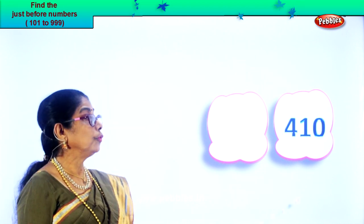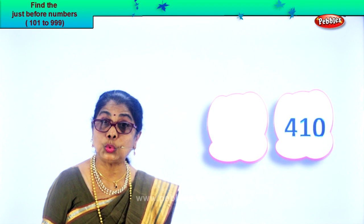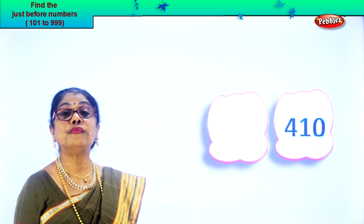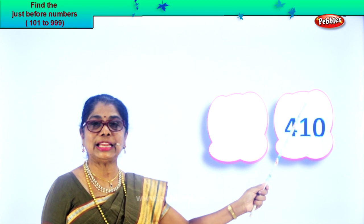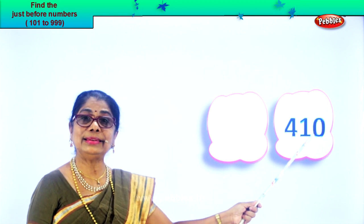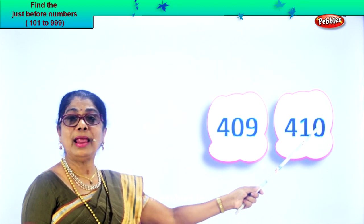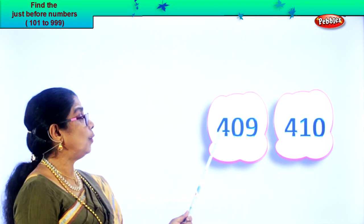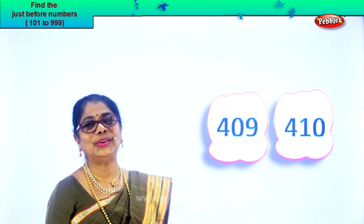Let's take one more number. Read: four hundred and ten. Zero in the ones place, one in the tens, and four in the hundreds place — four hundred and ten. From zero you cannot take. So the ones place and the tens place together — you have ten here. What is one less than ten? Nine. So you say four hundred and nine. Four hundred and nine is the number before four hundred and ten. Four hundred and nine, four hundred and ten.